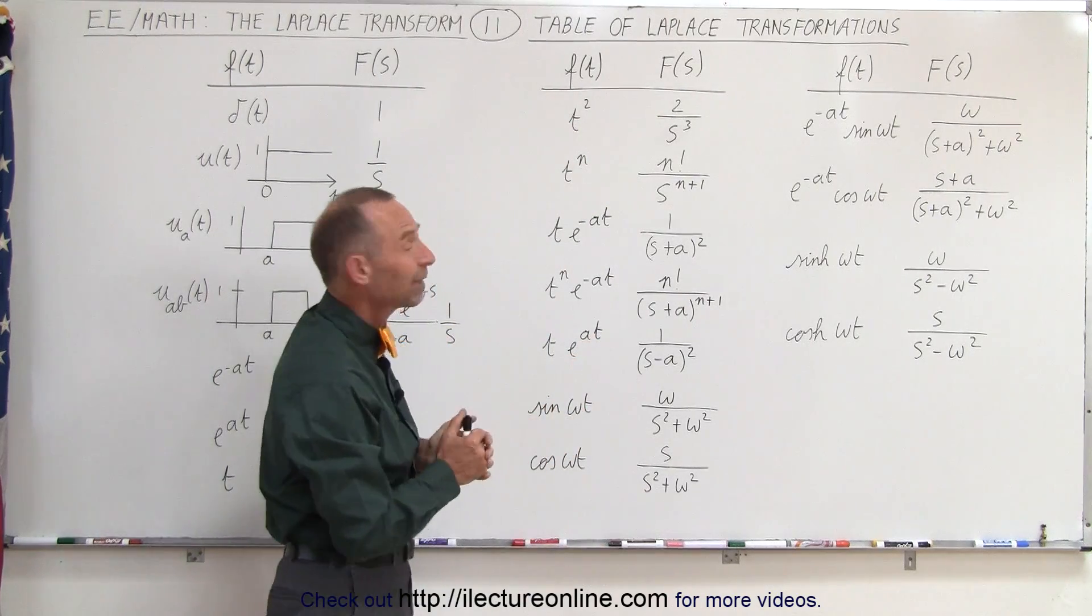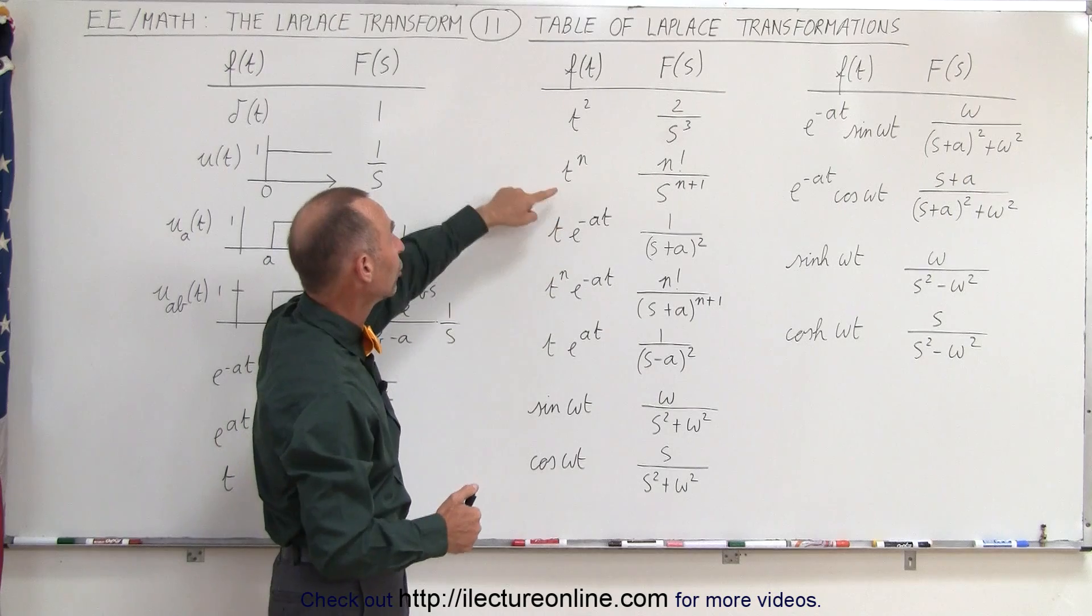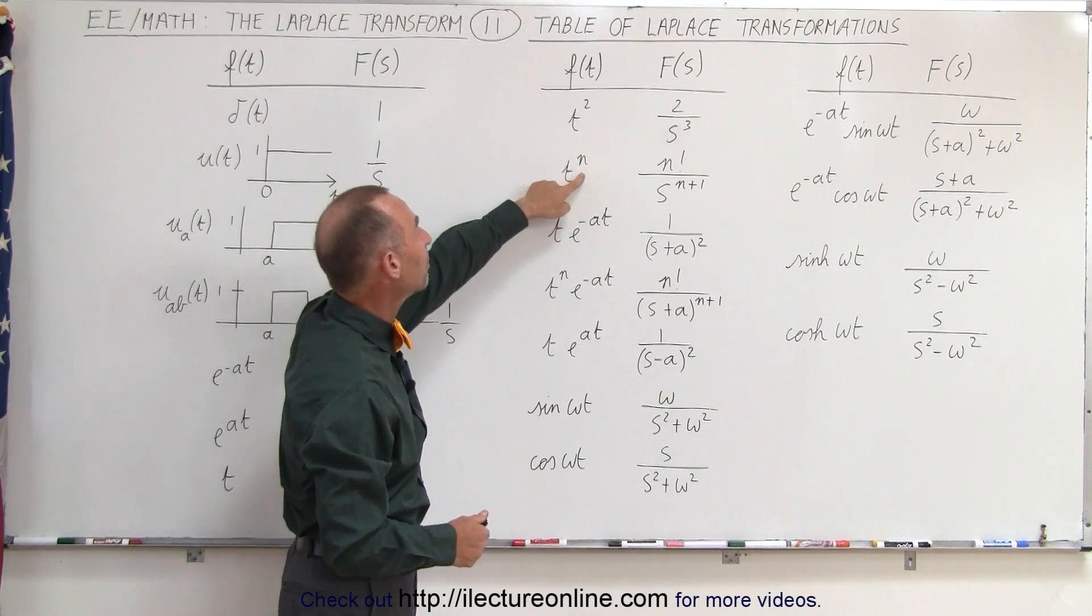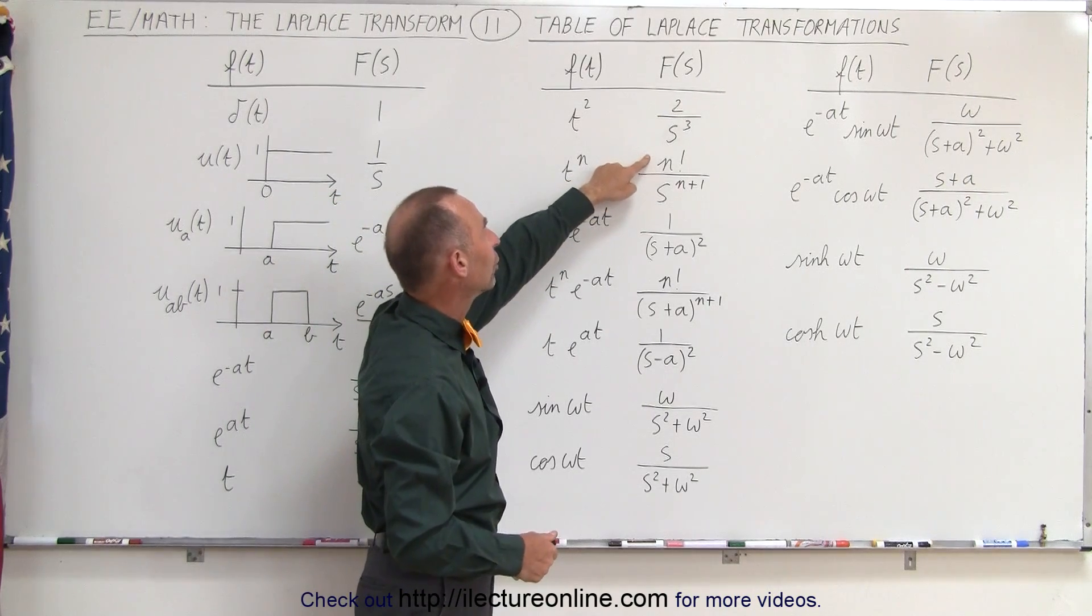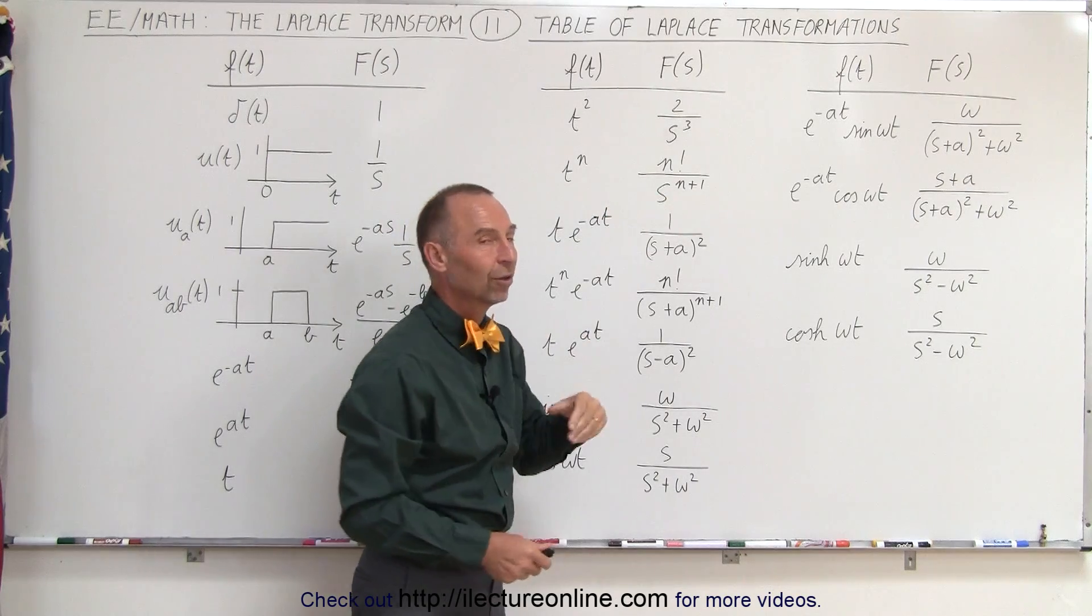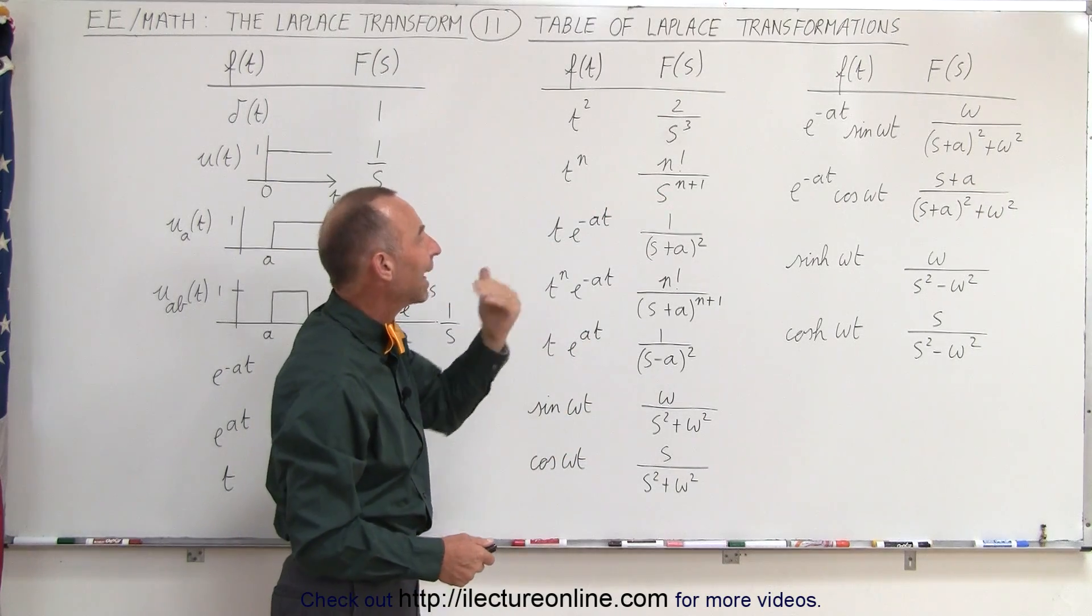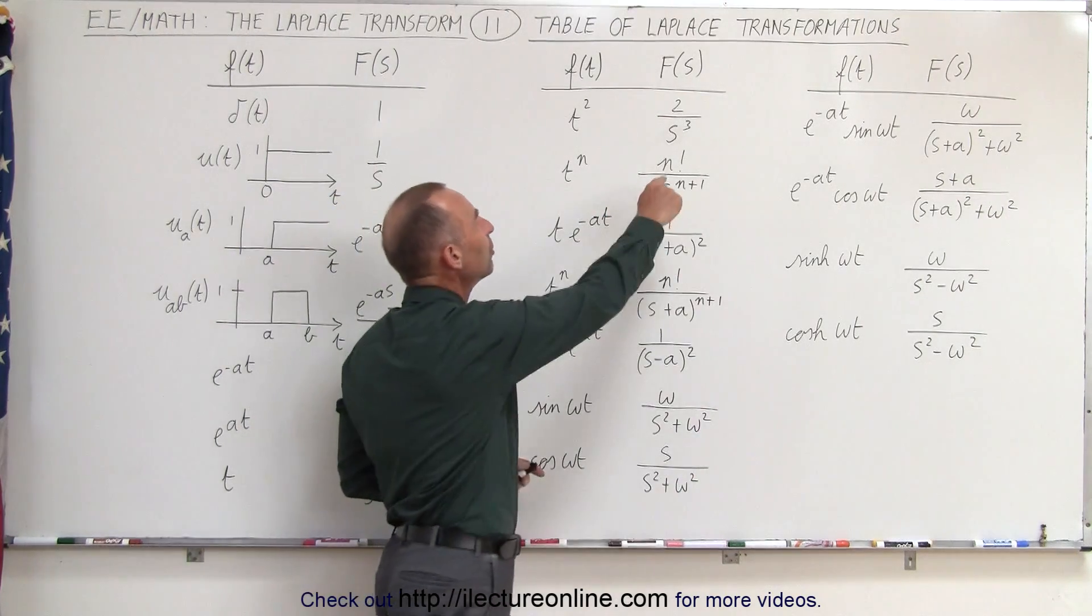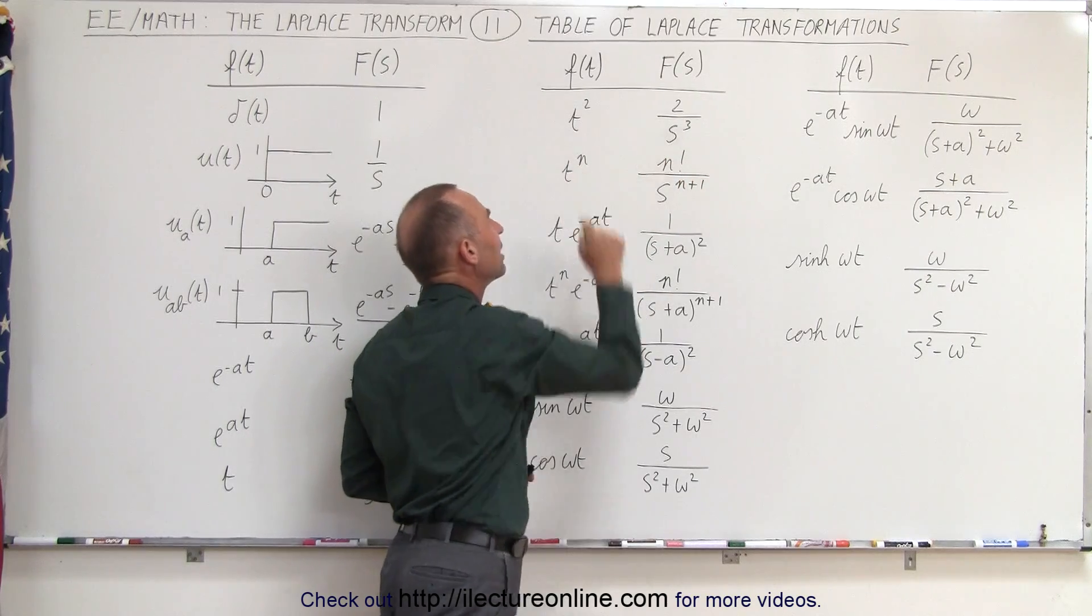That's kind of strange, but then if you see the general equation, you realize why t to the n power is n factorial divided by s to the (n plus 1). So it's always equal to 1 over s to the (n plus 1). In the numerator, we get the factorial of the exponent.